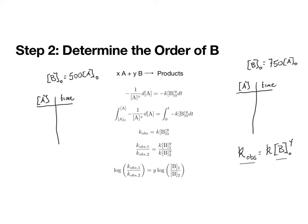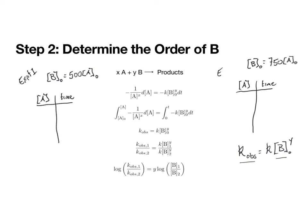And what that lets us do is it allows us to set up this ratio where we think about experiment one and experiment two. And we can make a ratio of this K observed equation between experiment one and experiment two. And using this relationship, we can solve for Y and learn the order of the reaction with respect to B.